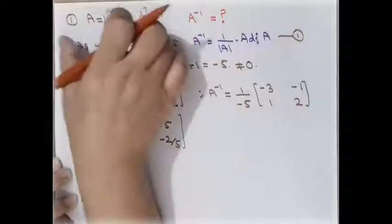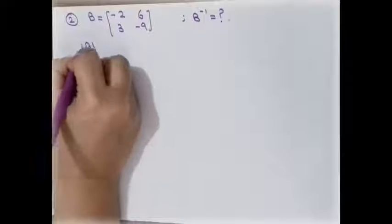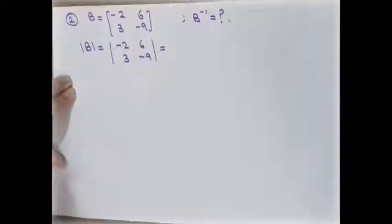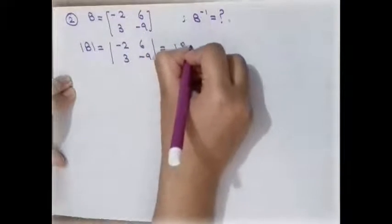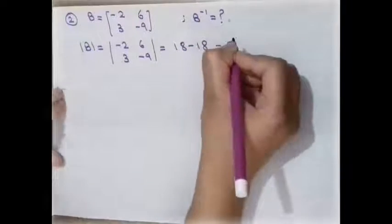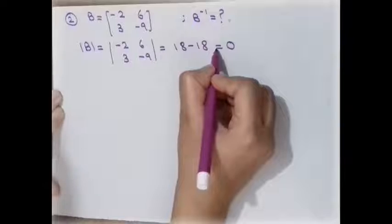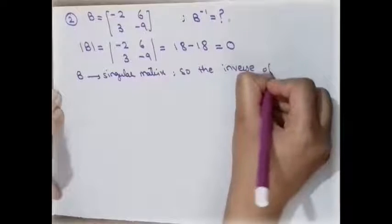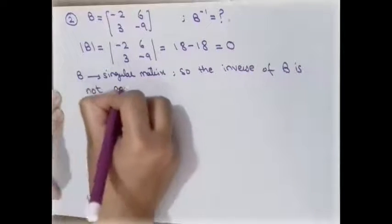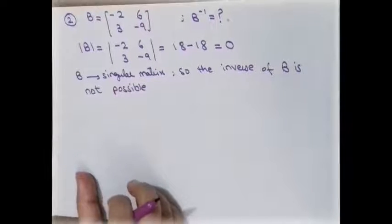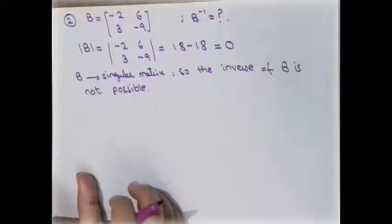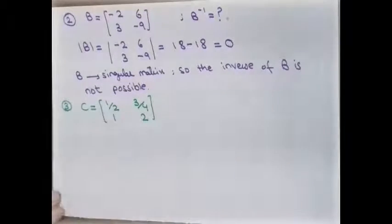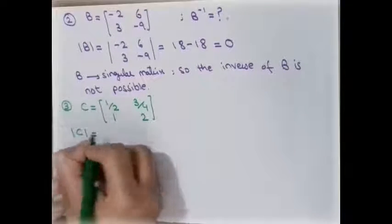For the second example, we first determine the determinant of the matrix with entries −2, 6, 3, and −9. According to the determinant formula it equals 18 minus 18, which equals zero. Since the determinant is zero, this is a singular matrix. Therefore, the inverse of B is not possible, as we discussed in the important points: the inverse only exists for a non-singular matrix.